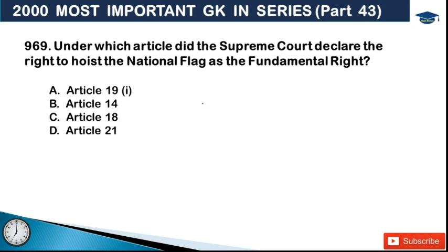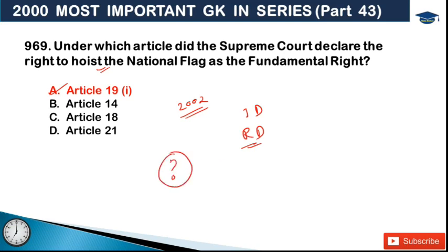Next: under which article did the Supreme Court declare the right to hoist the national flag as a fundamental right? Options include Article 19.1, Article 14, Article 18, and Article 21. The answer is Article 19.1. Before 2002, private citizens could only hoist the flag on Independence Day and Republic Day. The Supreme Court declared hoisting the national flag as a fundamental right under Article 19.1.